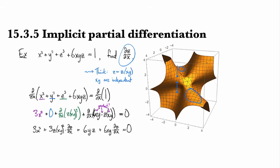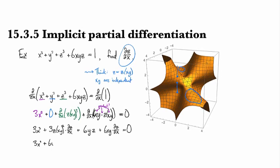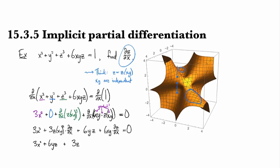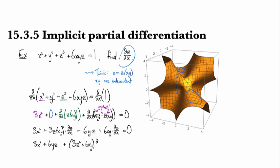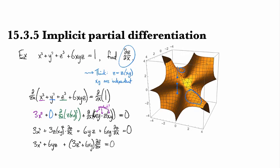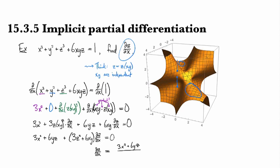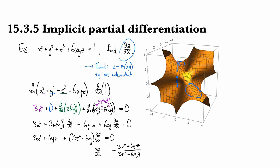So now we've got 3x² + 6yz plus, and then we've got 3z² + 6xy all times partial of z with respect to x. And so then we can solve for dz/dx. And we get -3x² - 6yz divided by 3z² + 6xy. There we go.